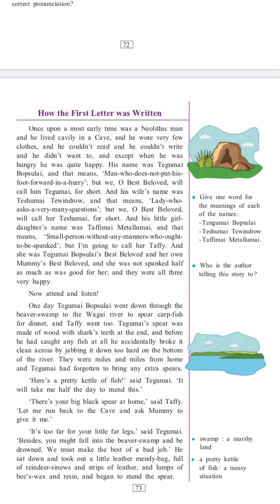How the first letter was written. Once upon a time, there was a Neolithic man and he lived in a cave. He wore very few clothes and he couldn't read and he couldn't write, and he didn't want to. And except when he was hungry, he was quite happy. His name was Tegumai Bobsulai, which means 'man who does not put his foot forward in a hurry.' But we, O Best Beloved, will call him Tegumai for short.